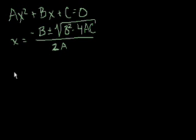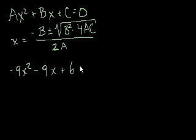So let's do a problem, and hopefully this should make a little more sense. Let's say I had the equation minus 9x squared minus 9x plus 6 equals 0. So in this example, what's a? a is the coefficient on the x squared term. The coefficient is minus 9. So let's write that. a equals minus 9.